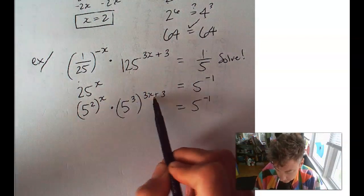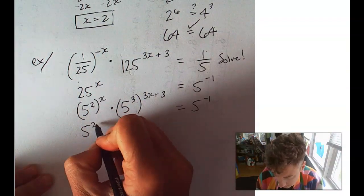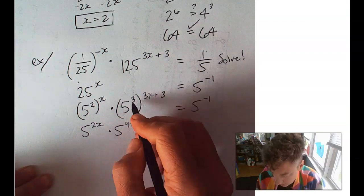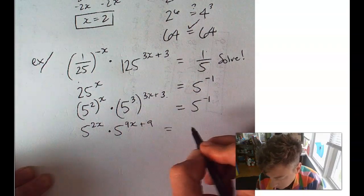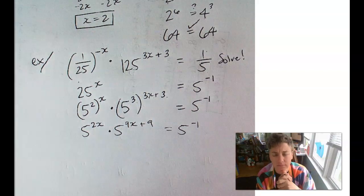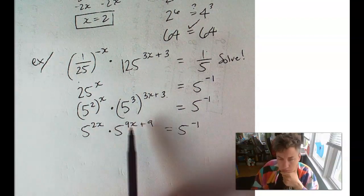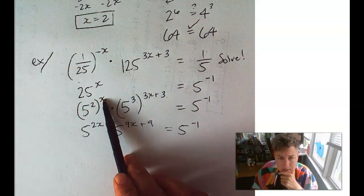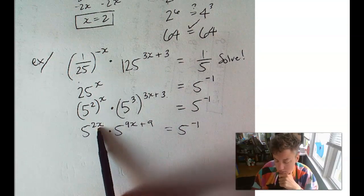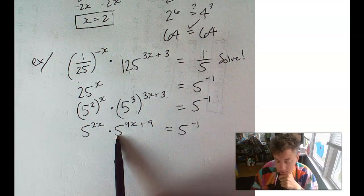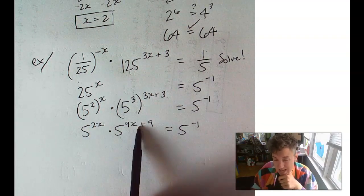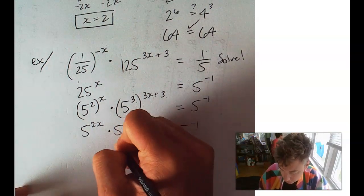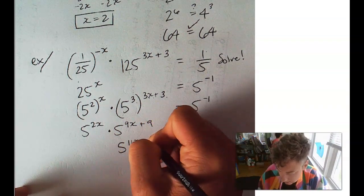Okay, we multiply these together. So, we get 5 to the 2x times 5 to the 3 times 3x is 9x plus 3 times 3 is 9 equals 5 to the negative 1. So, now what do we do with these exponents? Here, we have an exponent to an exponent, a power to a power we multiplied. Here, we've got two bases that are the same.